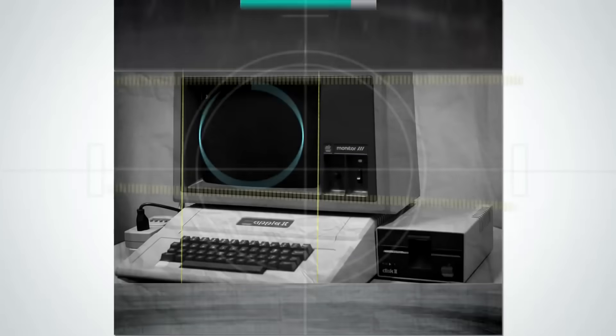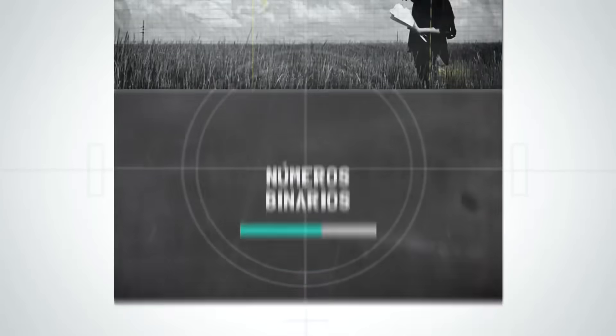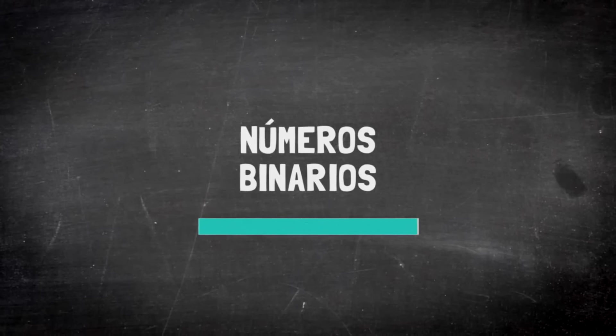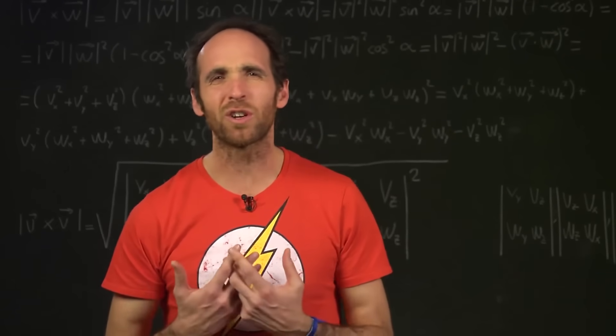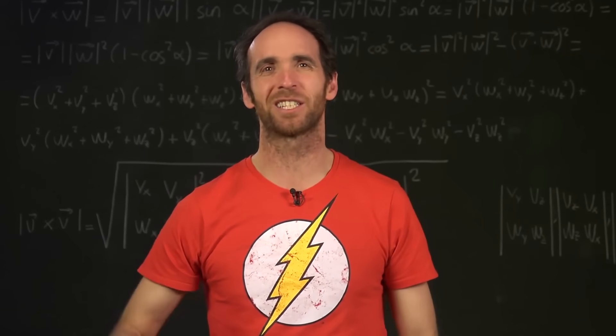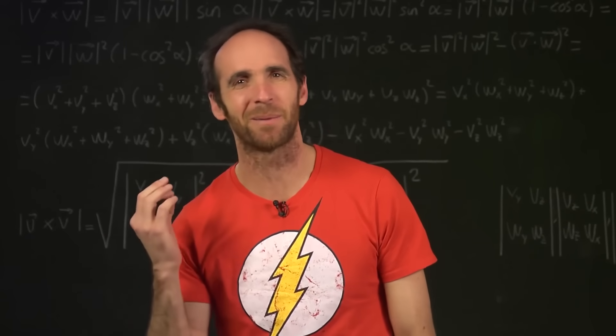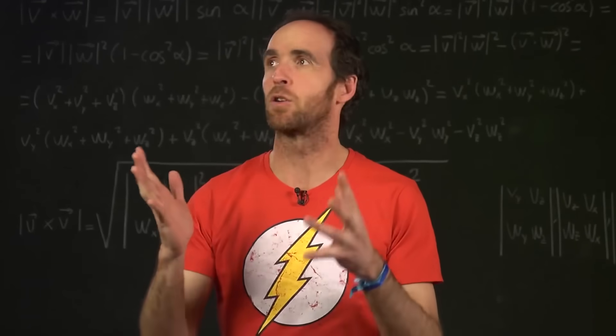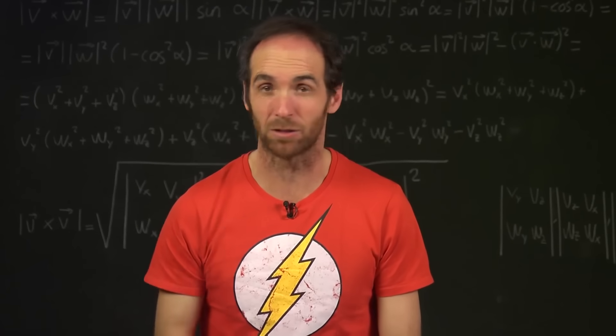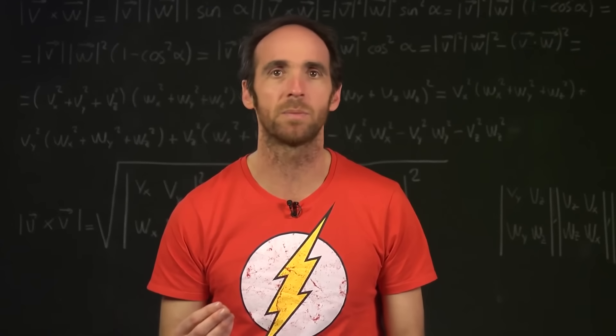I'm going to explain to you what this is about — binary code and binary numbers. You may have noticed that binary numbers appear everywhere, that computers speak in binary code, that binary numbers encode computer and electronic communications. The binary code is made with zeros and ones. Even in the movie Interstellar and in many others, binary communications are made.